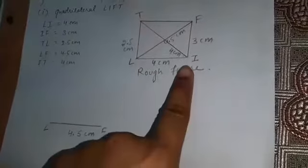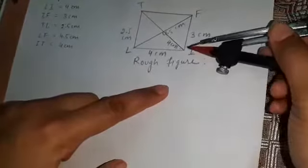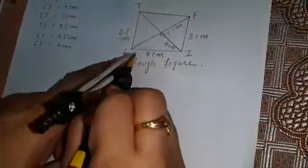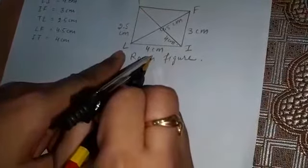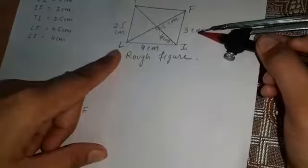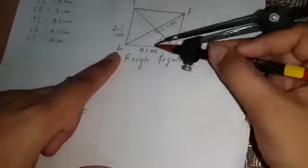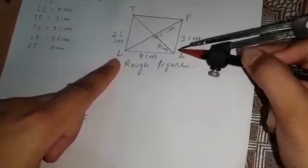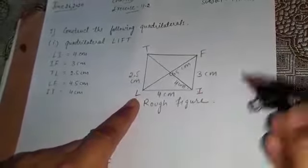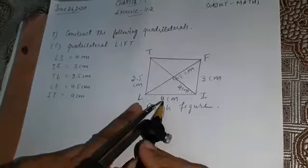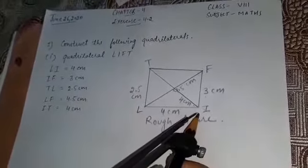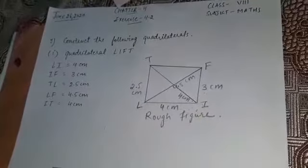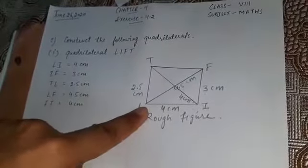Now, on one side of LF there is point T, and on the other side of LF there is point I. On this side we have both measurements: LI is 4 centimeters and FI is 3 centimeters. This means we can easily get point I by drawing arcs of 4 centimeters and 3 centimeters. So firstly, I am going to find point I on one side of LF.